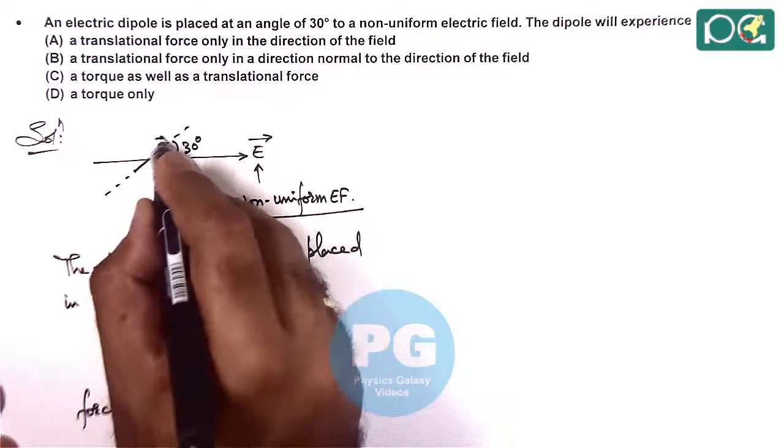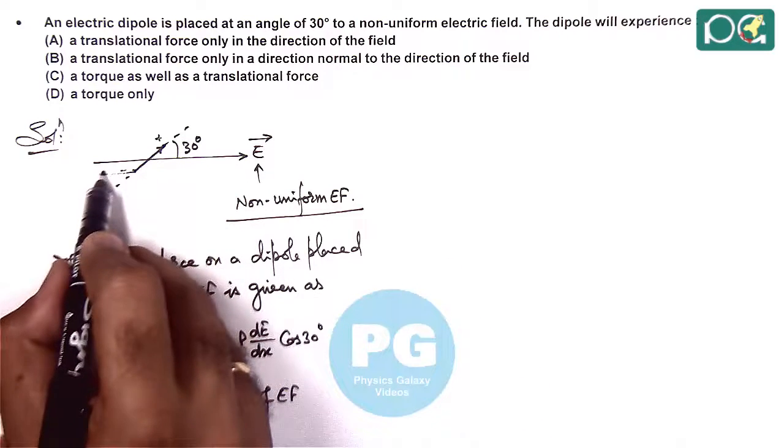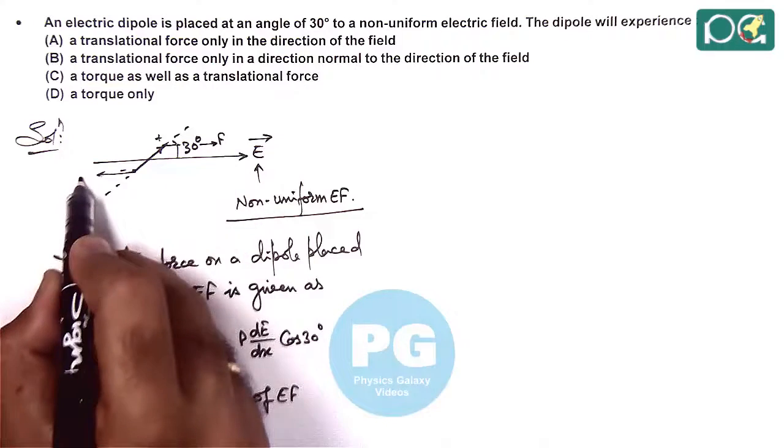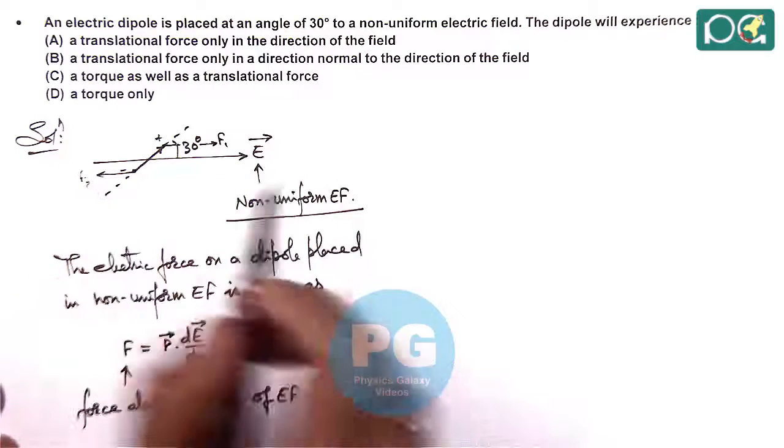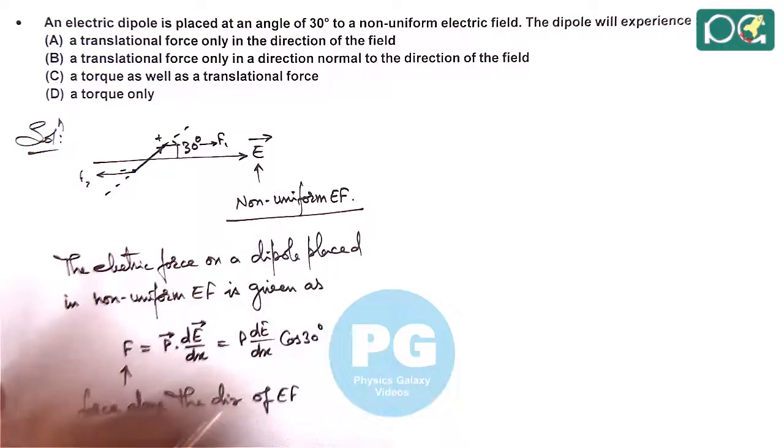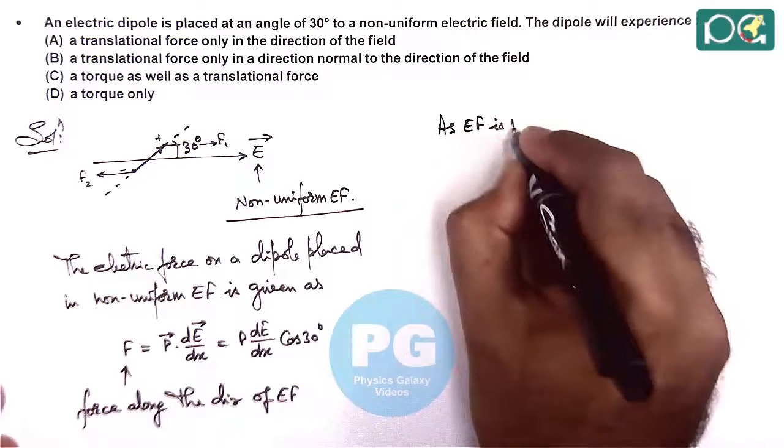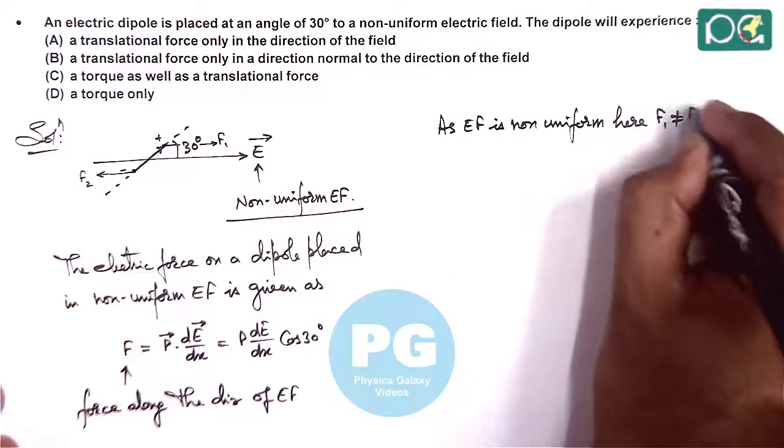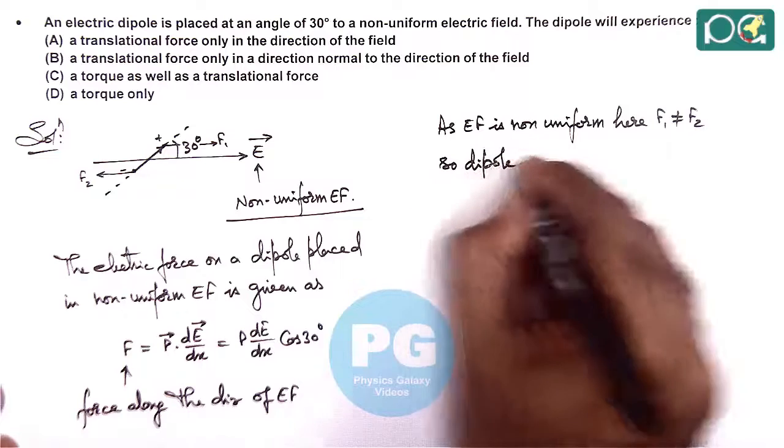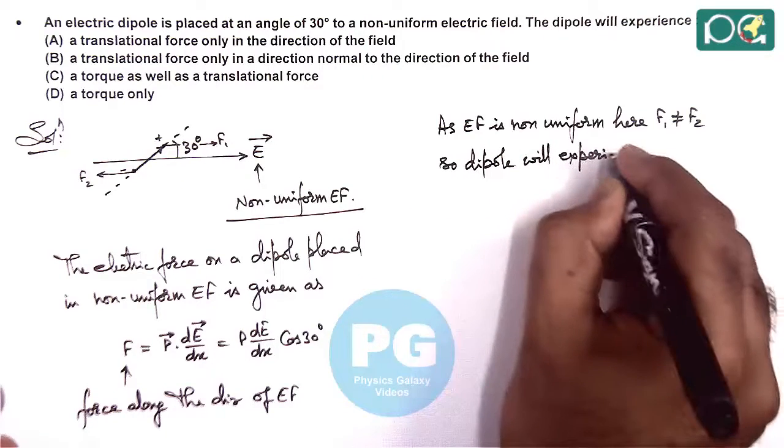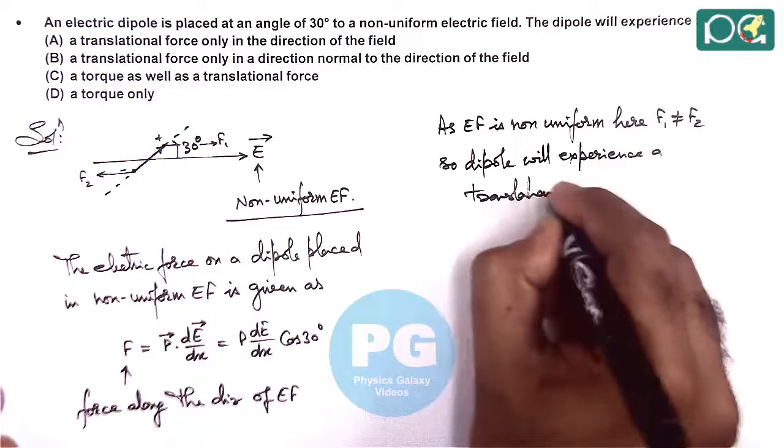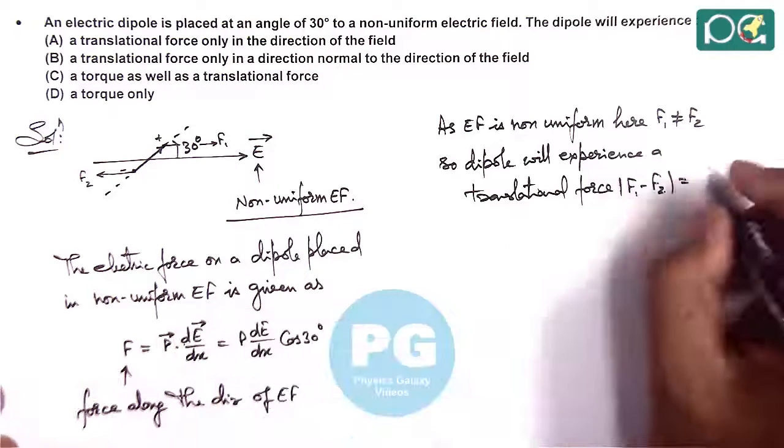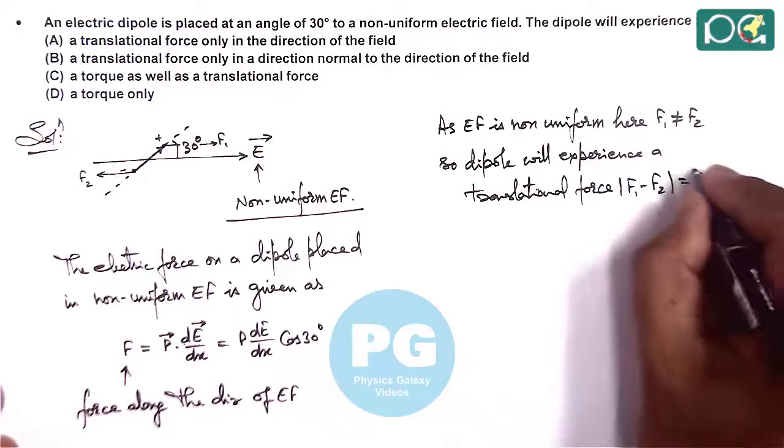Because on this dipole if this is the positive pole and this is the negative pole, we know on negative side the force is in the direction opposition to electric field and on the positive side the force is along the direction of electric field. Here it is f1, this is f2, and obviously due to non-uniform electric field f1 is not equal to f2. So we can say dipole will experience a translational force which is mod of f1 minus f2 and this is given as p dE by dx cos 30 degrees, this is p dot dE by dx.